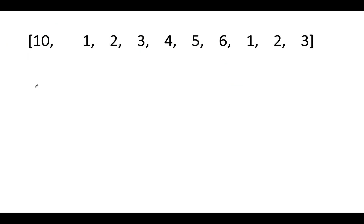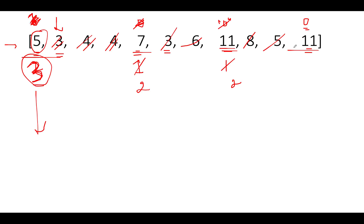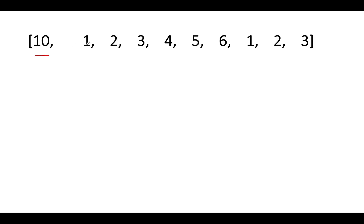Let's walk through another test case. Let's assume the elements are 10, 1, 2, 3, 4, 5, 6, 1, 2, 3. You will see that all elements after 10 are lower than 10, as a result of which we will delete all of them - giving a count value of 9. But is this correct? It's not correct - 9 is not the correct answer.